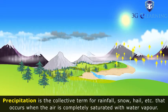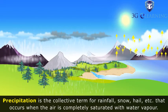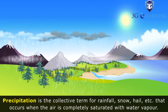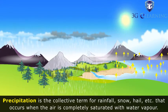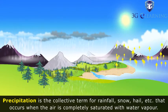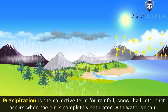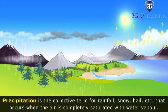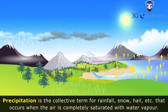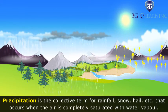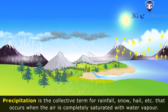Precipitation is the collective term for rainfall, snow, hail, etc., that occurs when the air is completely saturated with water vapor.